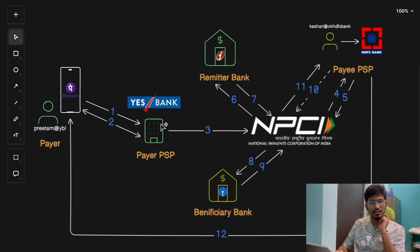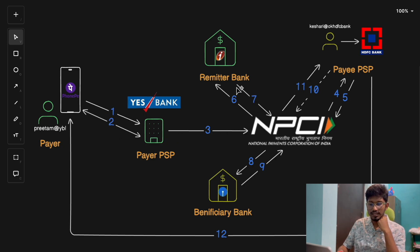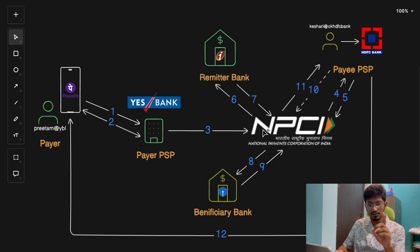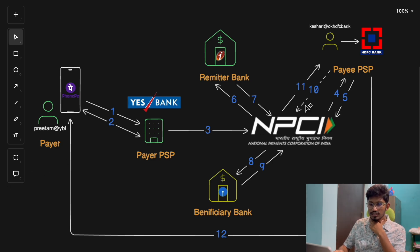Step 3 is the Payment Request step. Once you have authenticated with your UPI PIN, the PSP sends a payment request to the Remitter Bank where you have your account, and it routes the request via NPCI. Note that the request is sent through the NPCI network, which manages the entire VPA ecosystem.